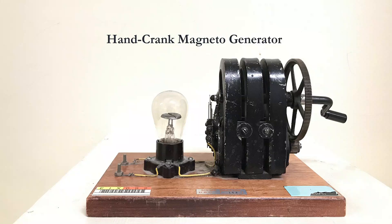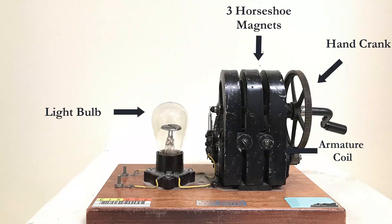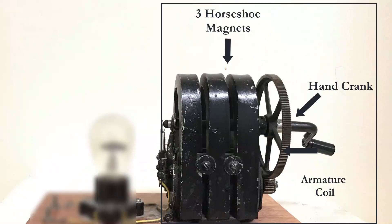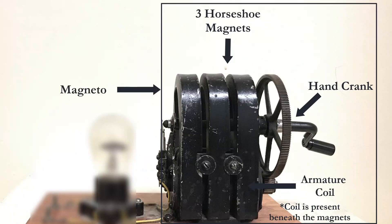Hello everyone, today we'll learn about a hand crank magneto generator. This generator consists of an armature coil, a hand crank, three horseshoe magnets, and a light bulb. The three horseshoe magnets, the hand crank, and the armature coil constitute what is called a magneto.